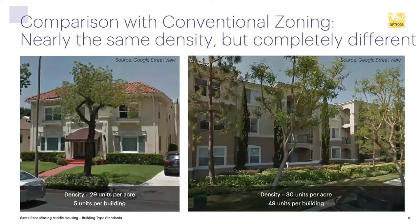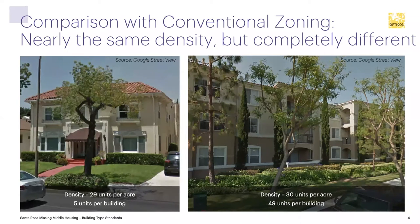Along with that, the density approach we talked about early in this series is also not very helpful. This is that comparison we showed earlier: a three-story building with 49 units at 30 units per acre, compared to a five-unit two-story building with 29 units per acre. It's a very prevalent practice to use these metrics, but in terms of the form these metrics produce, it's not predictable and doesn't necessarily fit in with what is already in the neighborhood.